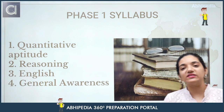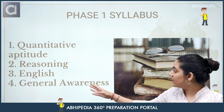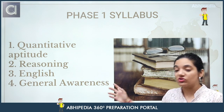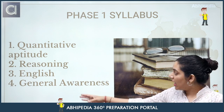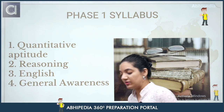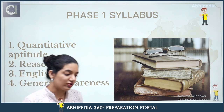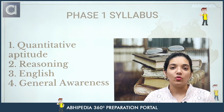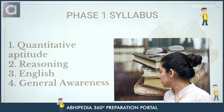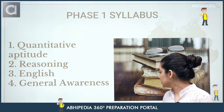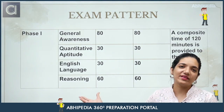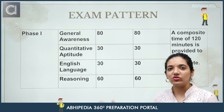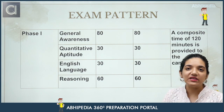In Phase 1 you have Quant, Reasoning, English, and GA. GA carries 80 marks, which is the highest. Reasoning is of 60 marks. After that, the remaining 60 marks are equally split — so Quant and English each carry 30 marks. You get two hours to complete this paper. Phase 1 has a sectional cutoff as well, so you have to prepare section-wise carefully.